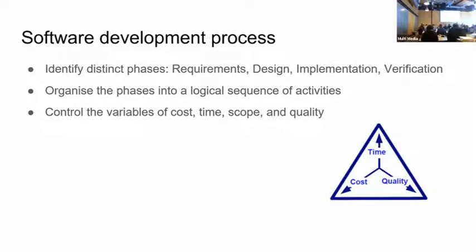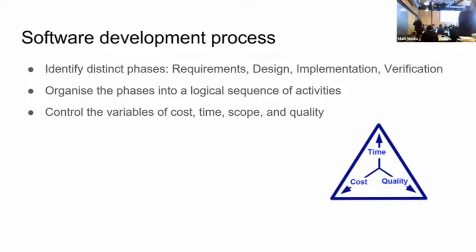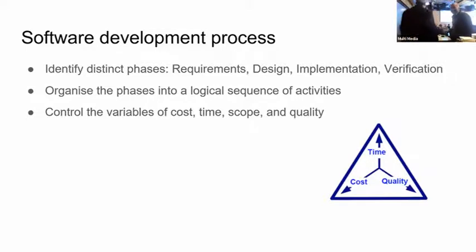This fits in the broader topic of software development process. In software engineering, it's a huge research area — how do we actually go about developing software? It's about how we identify distinct phases: requirements, design, implementation, and verification of software. Each of these is a large research area in itself. I'm going to talk about agile software development, which is a very specific instance of that much larger research area, and which I have most experience with.